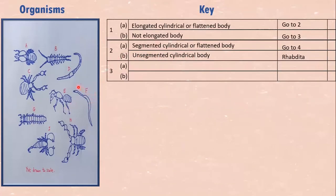It's unsegmented and cylindrical. It's only one. We found its name. It's Rabditis, a roundworm. We finish it. So we put the name down.